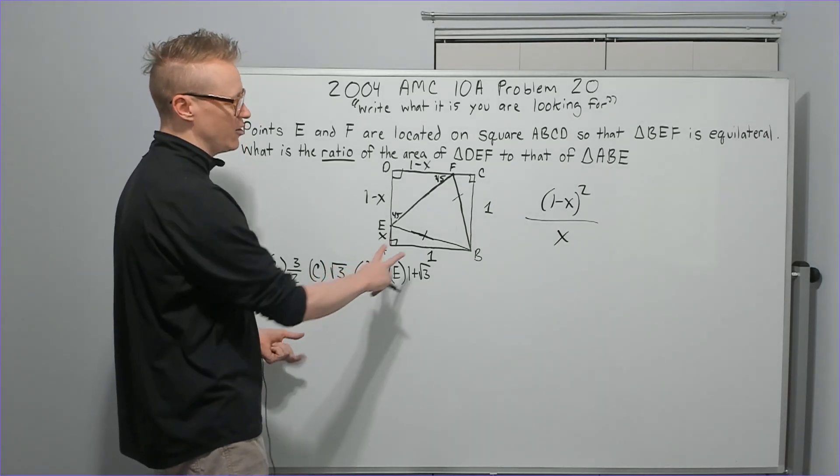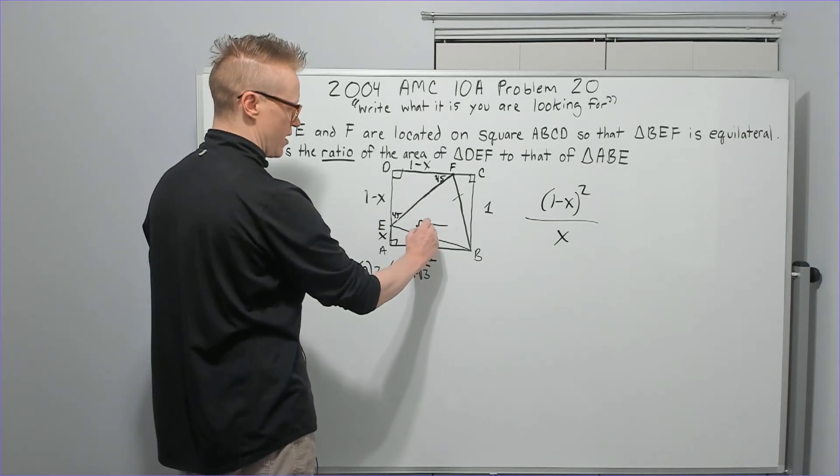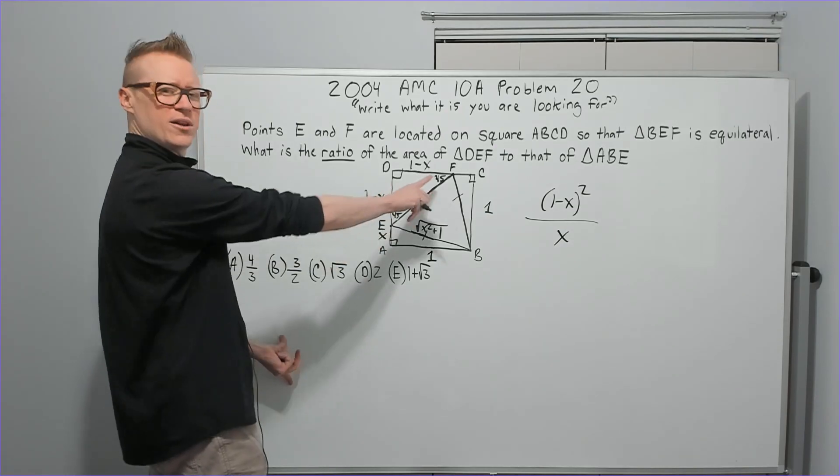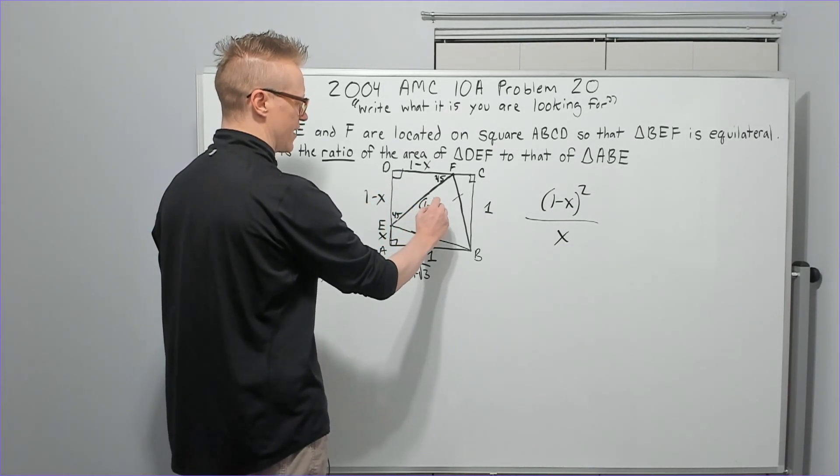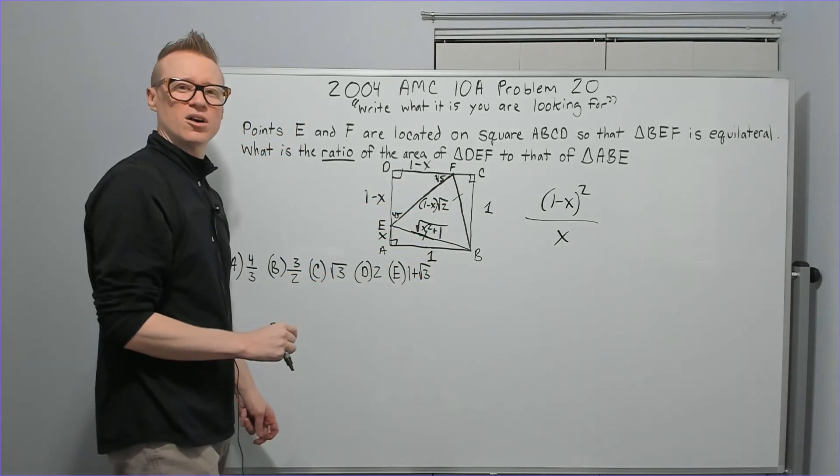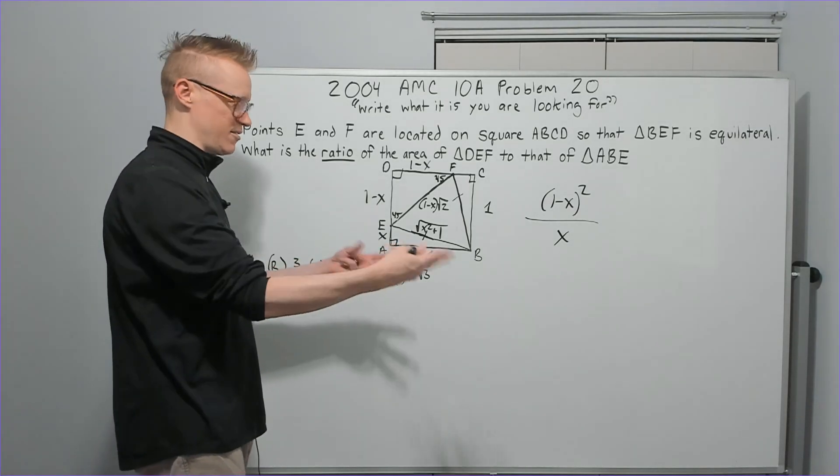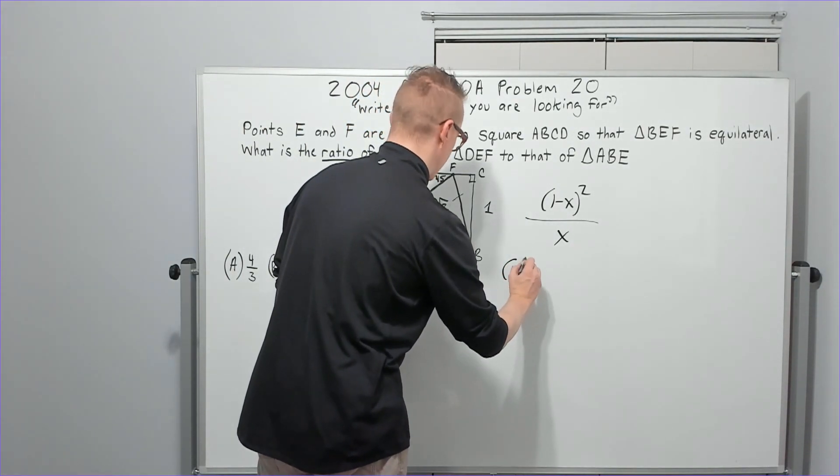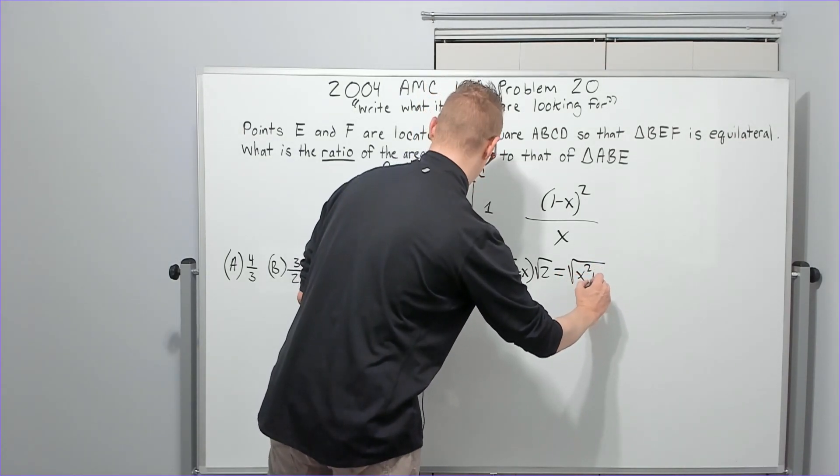Let's continue. We know by Pythagorean that this length is the square root of X squared plus one. And we know that this length over here by 45, 45, 90 properties is one minus X root two. So I know because this is equilateral that these two are equal. Everything's a progression. You just keep finding new things that justify your next step. So you're going to write one minus X root two equals X squared plus one.